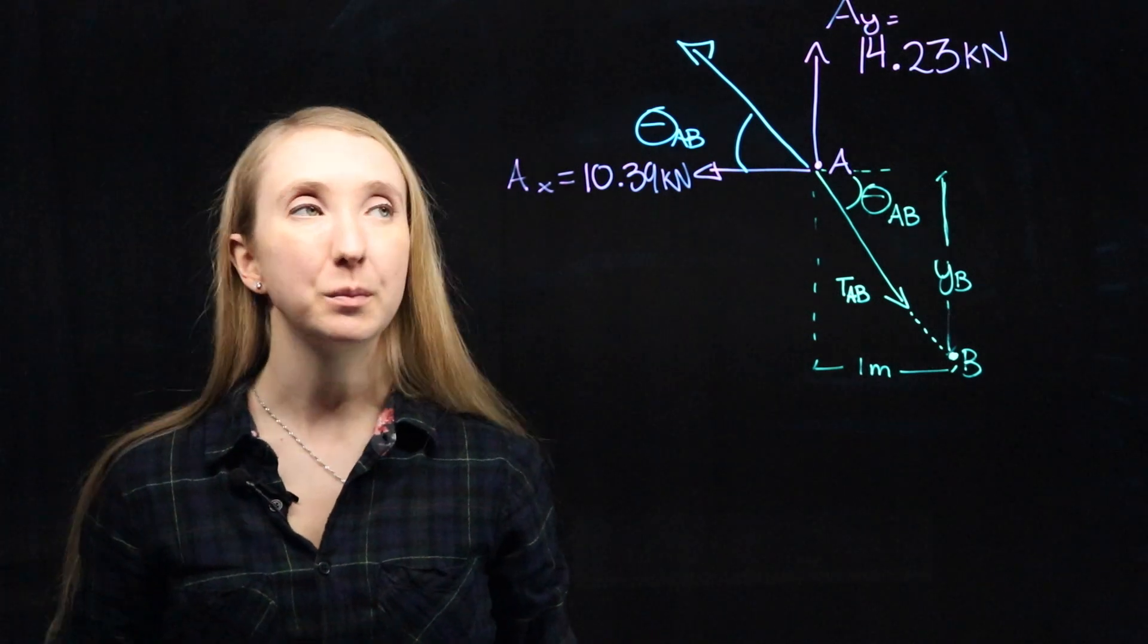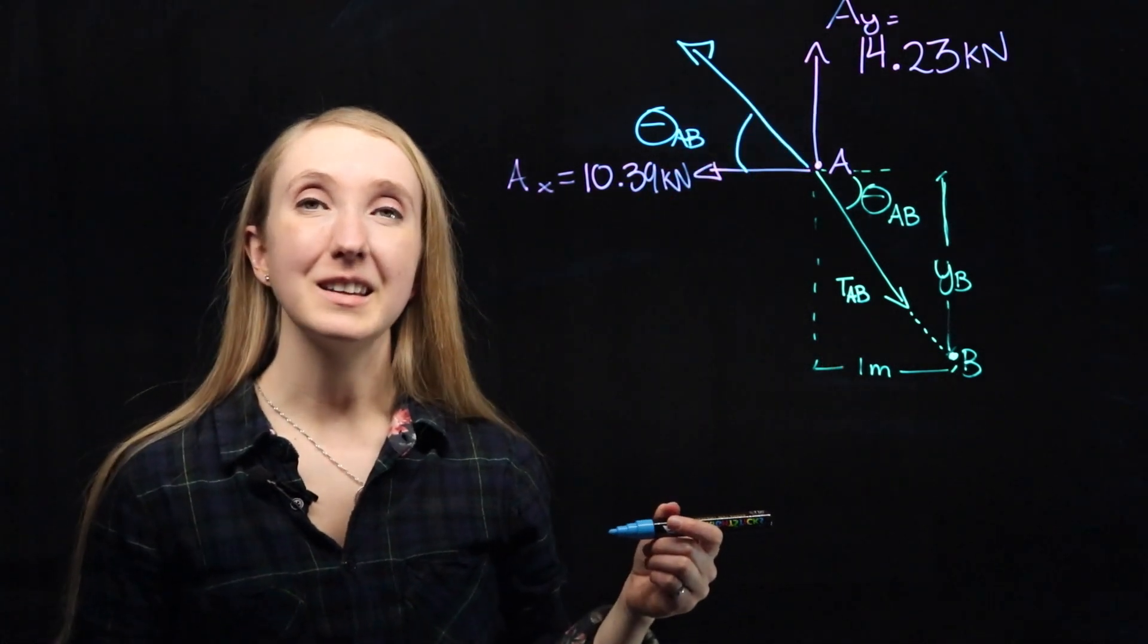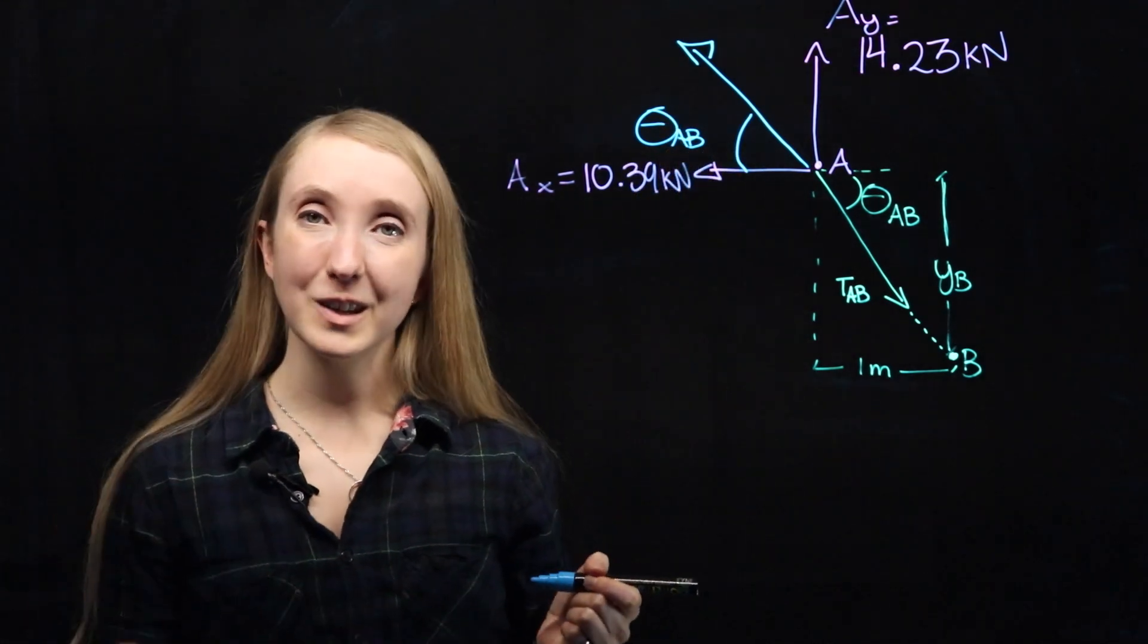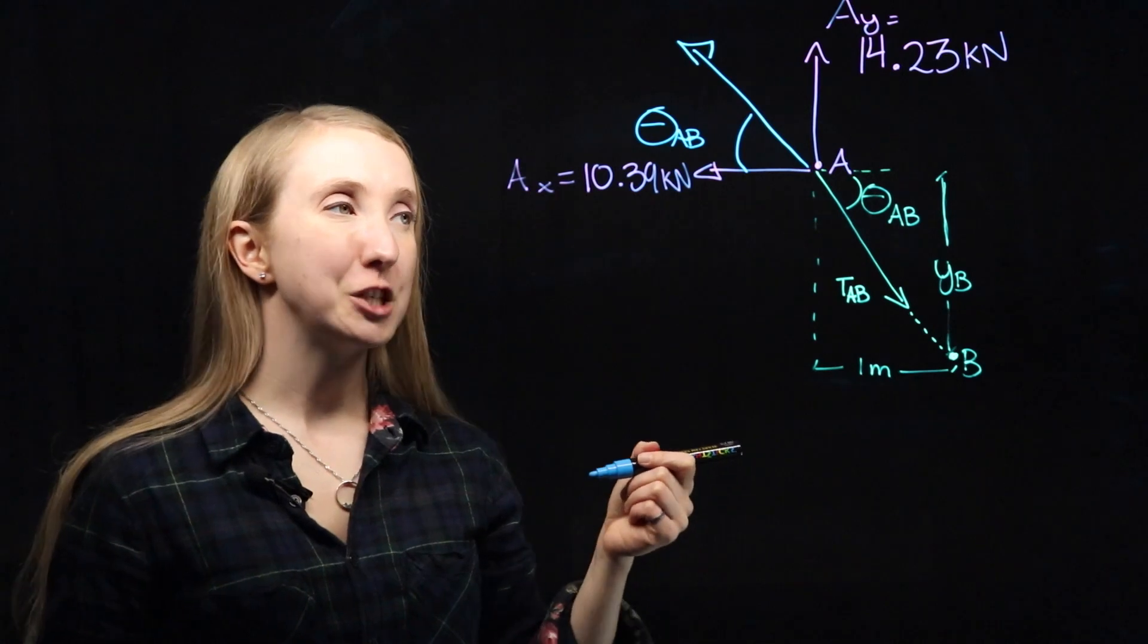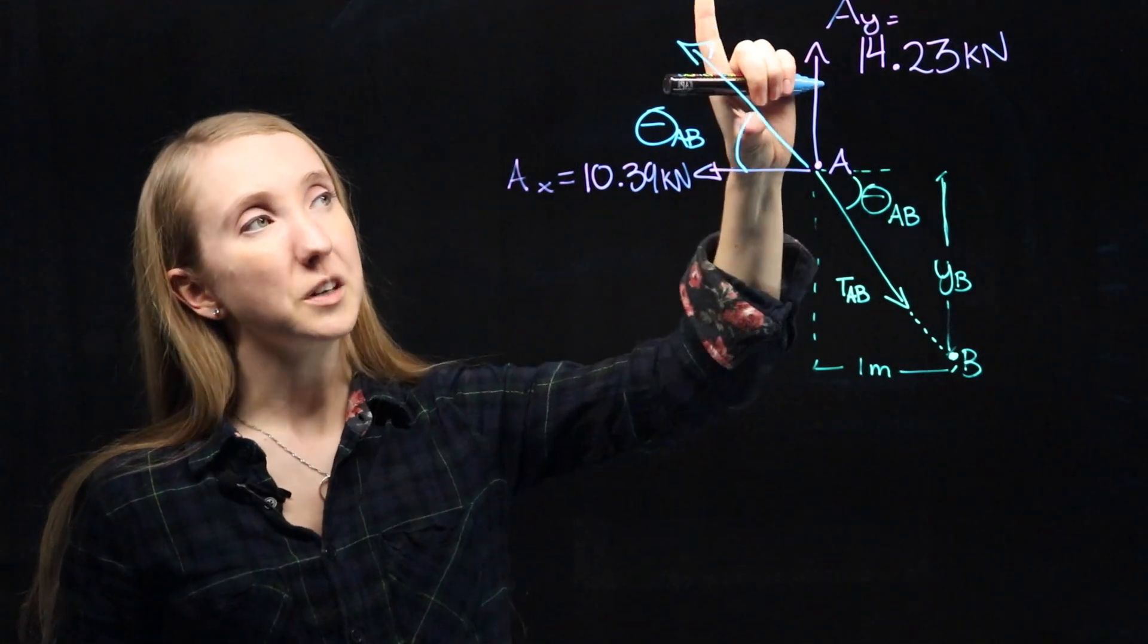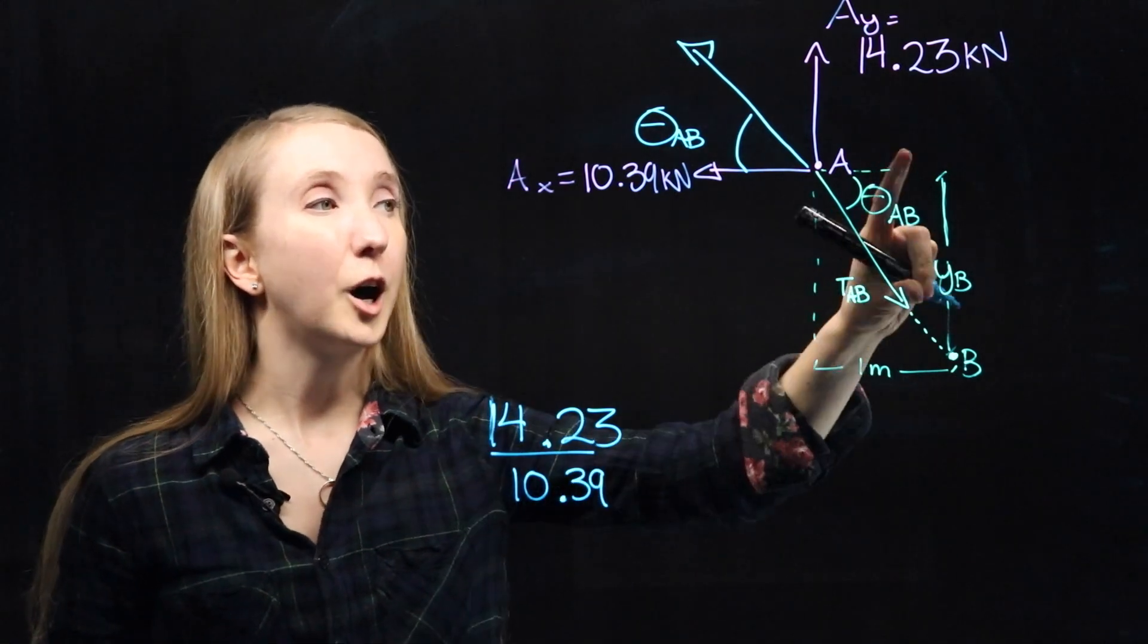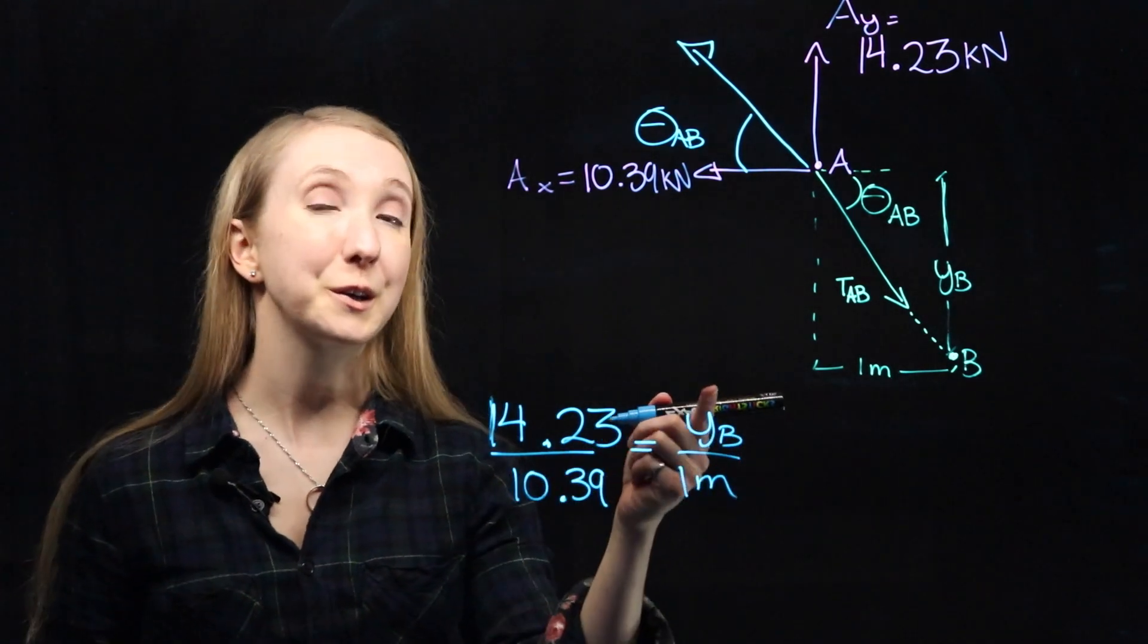We know from force equilibrium that if we do vector addition of Ax and Ay, it has to equal something that is exactly equal and opposite to the tension from TAB. Exactly the same, including the angle that it makes with the horizontal, theta AB. So the tangent of this angle has to equal the tangent of this angle. And the tangent of this theta AB would be equal to your opposite height, which is Ay, over your horizontal, which is Ax. And that has to equal your opposite over adjacent for your bottom angle.